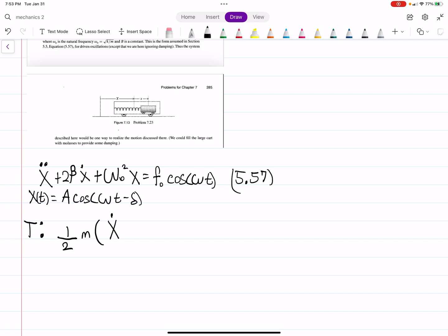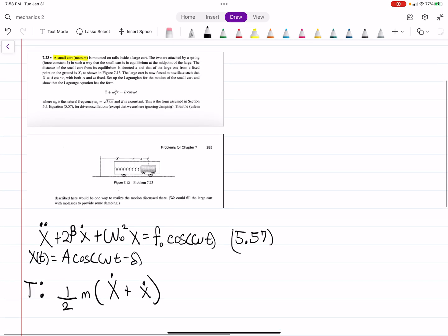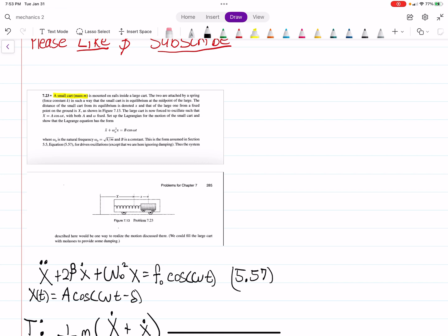Well, the velocity of the big cart is going to impact the velocity of the little cart. Because as it moves, if this cart moves way over here, that little cart also has velocity. And then, of course, plus X little dot. Hopefully you can see those are the different X's. And that's the velocity of the cart that is in the inside.